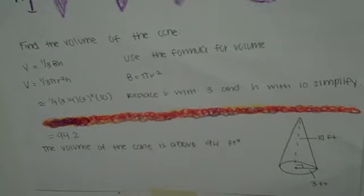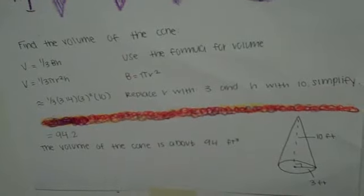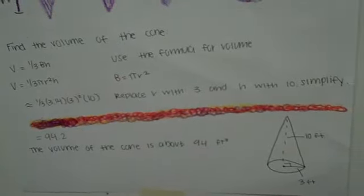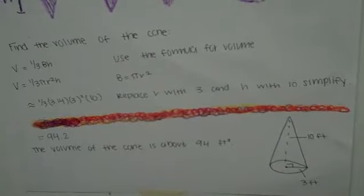So the final formula would be one-third times pi times three squared times ten. And the volume of the cone is about ninety-four feet cubed.